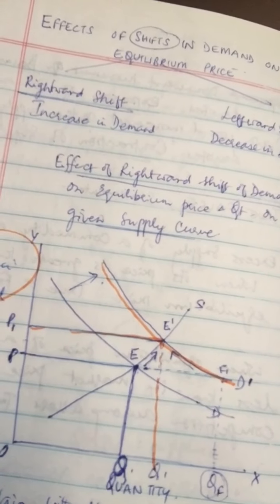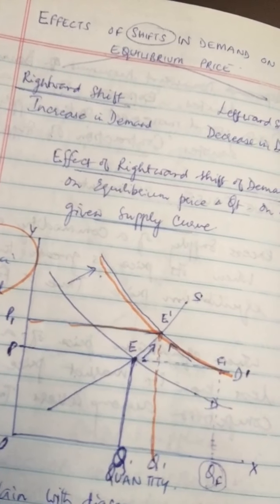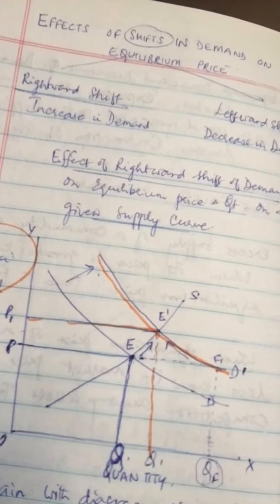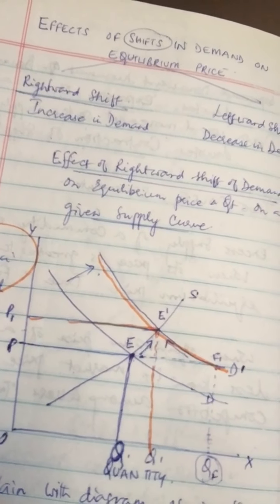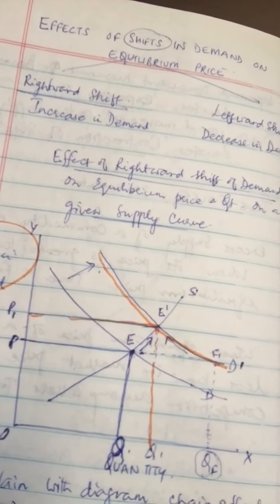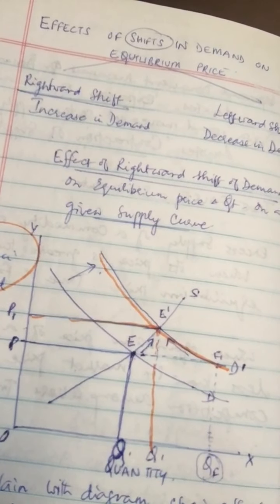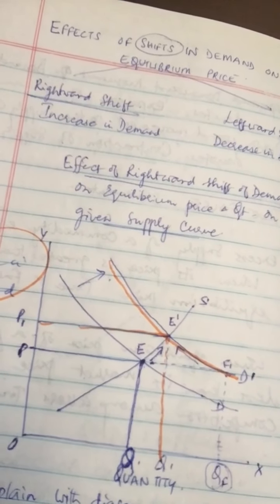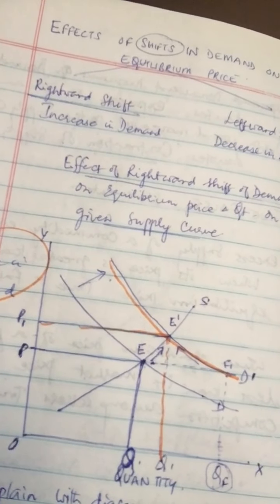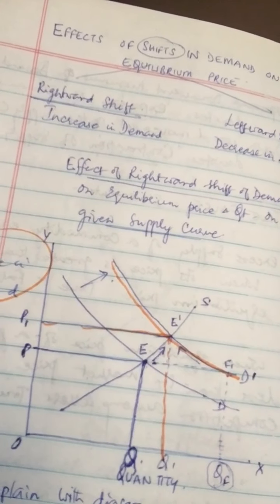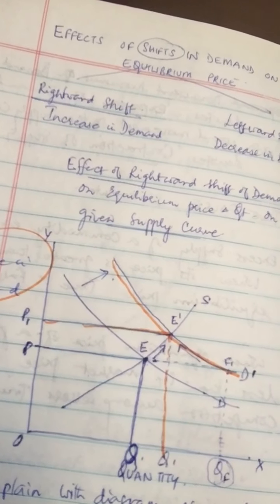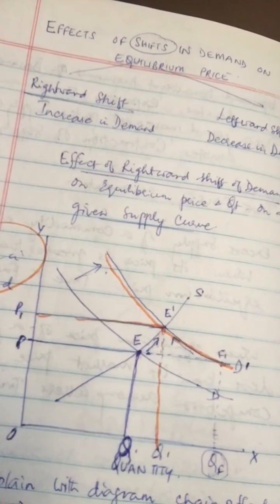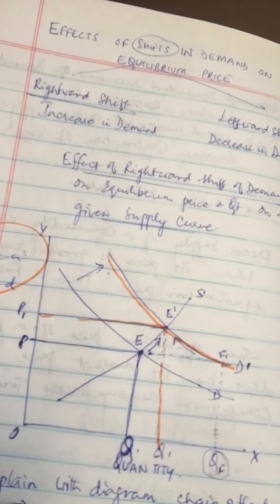The demand curve D1D1, shown in orange, represents an increase in demand. Increase in demand shifts the demand curve from DD to D1D1 to the right. This creates excess demand — you can see that from E to F1. At the same price OP, more is demanded.